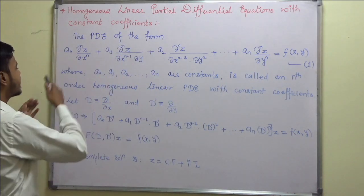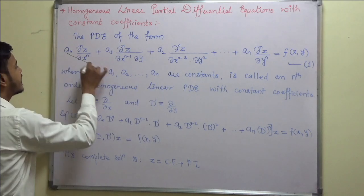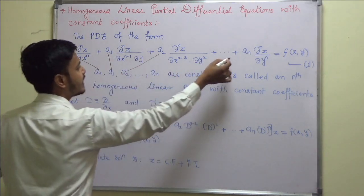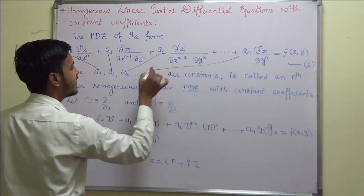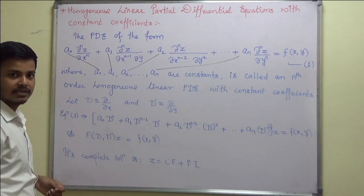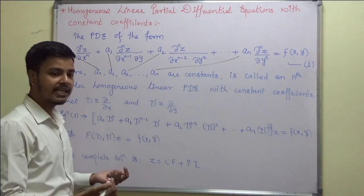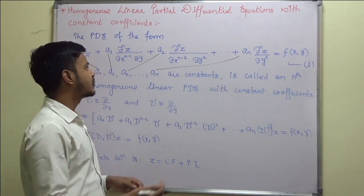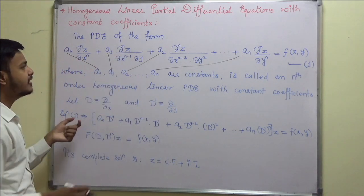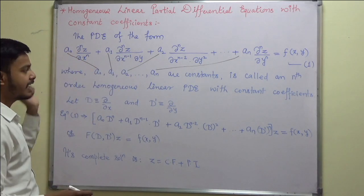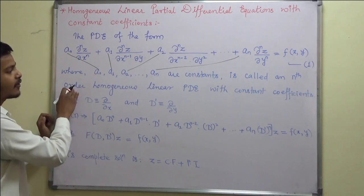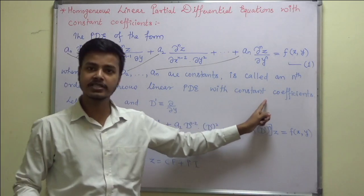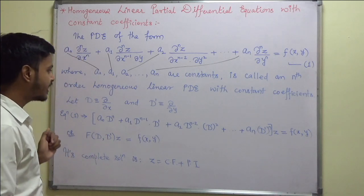Now, what are a₀, a₁, a₂, and aₙ? These are constants — they may be any number like 2, 4, 7, something like that. So this equation is called nth order because the order is n. This is called an nth order homogeneous linear PDE with constant coefficients.